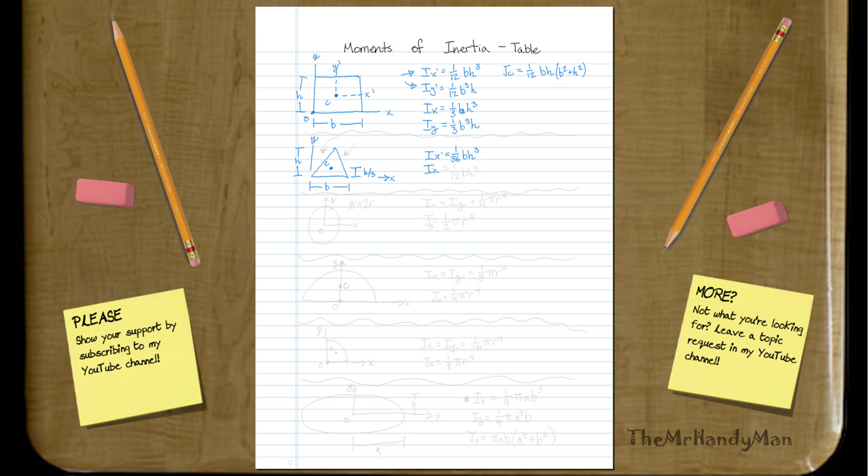For just around the X axis, you'll have 1/12th base times height cubed. And they only show the X axis inertias, because this is always based off of whichever base you pick, and realize that you could pick your base as any three sides.